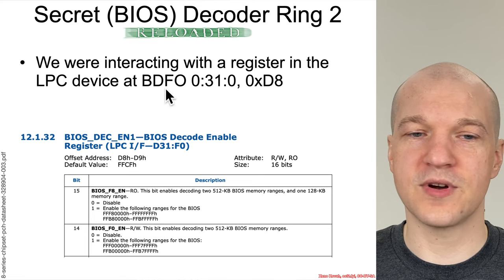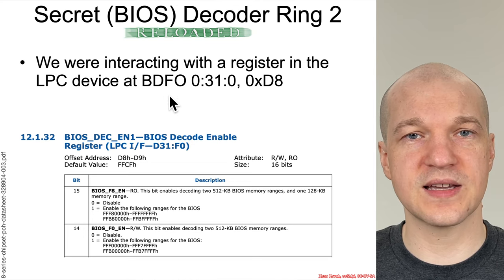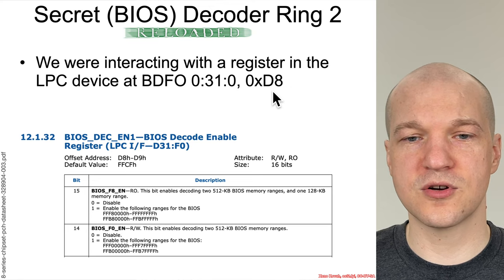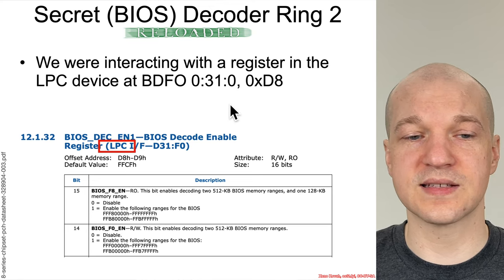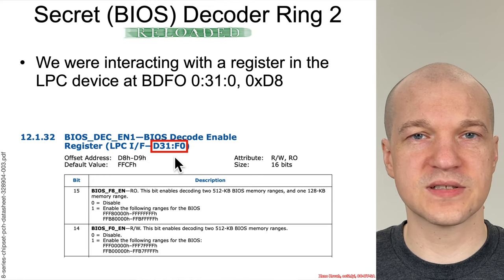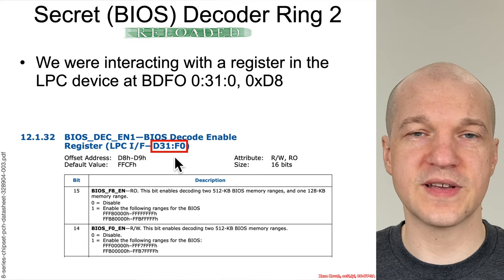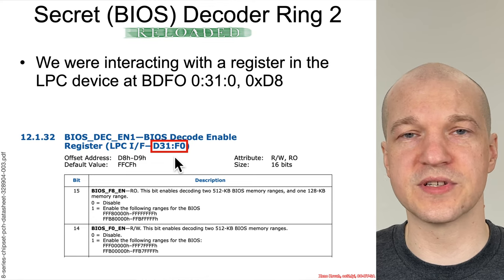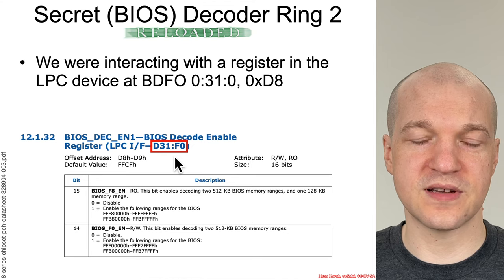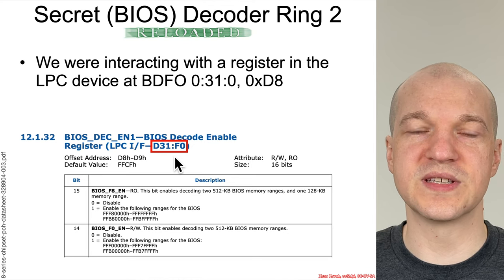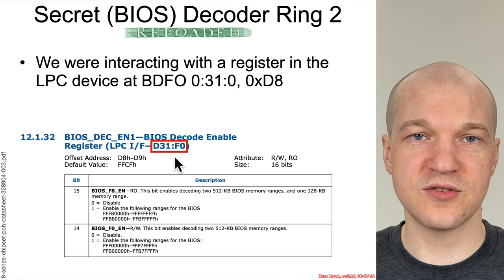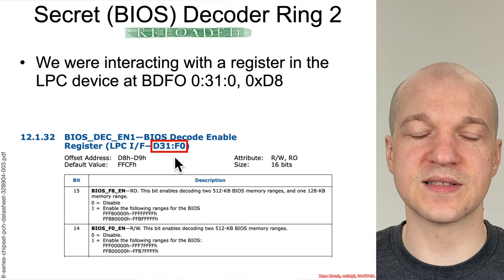We can now understand that it was talking about PCI configuration address space — BDF 0:31:0, offset D8 — in the context of this BIOS decode enable register. The original reason it existed in device 31, the LPC device, function 0, was because of the legacy firmware hub, which was an LPC device in pre-SPI flash usage. It continued to exist there until Intel eventually added SPI hardware on the 100-series chipsets and newer.